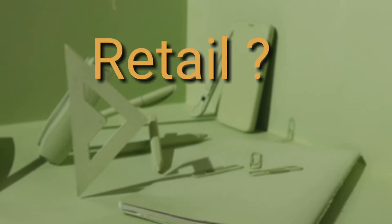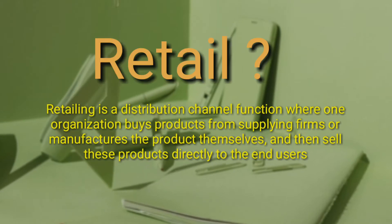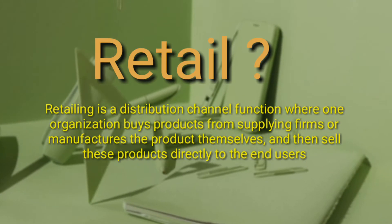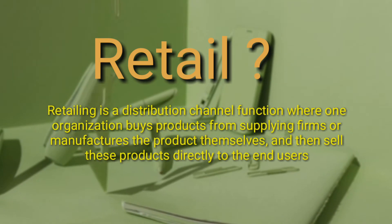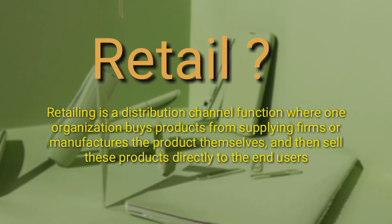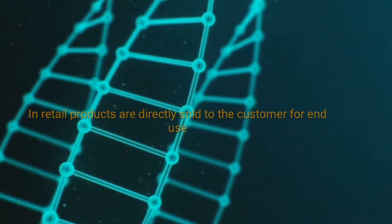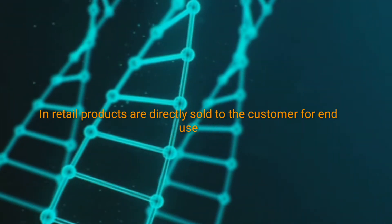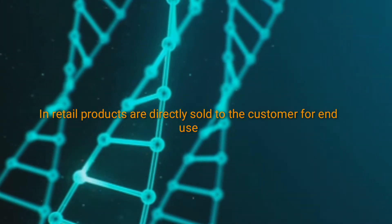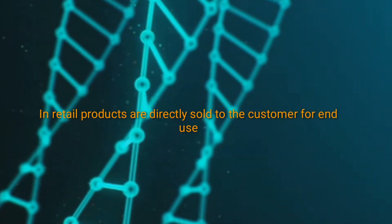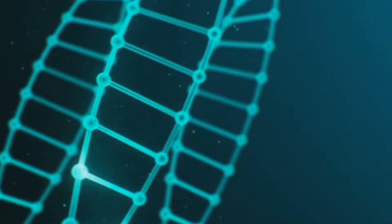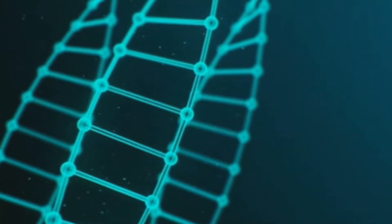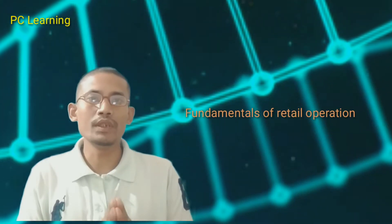Now, what actually is retail? It is a distribution channel function where one organization buys products from supply industry, firms, or manufacturers, or sometimes they produce themselves, and then sells those products directly to the consumer or customer. Thus, there is a direct link between the retailer and the customer. A retailer sells their products directly to the end user, and not for resale purpose.